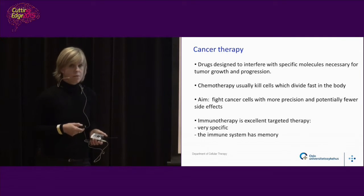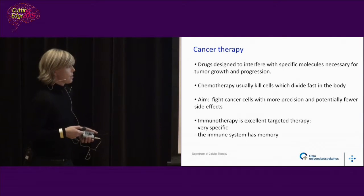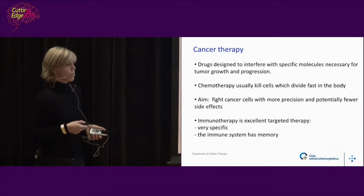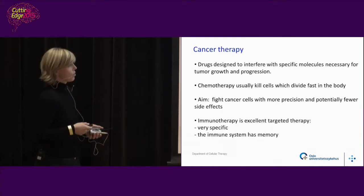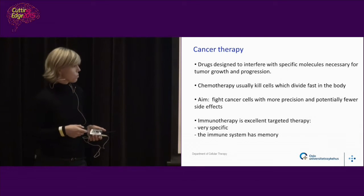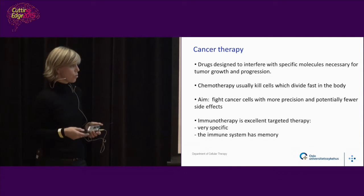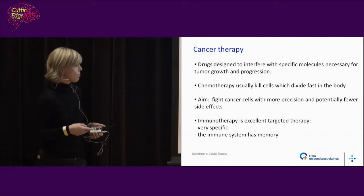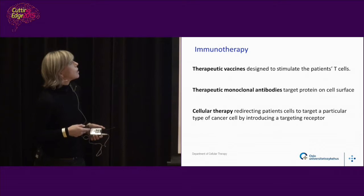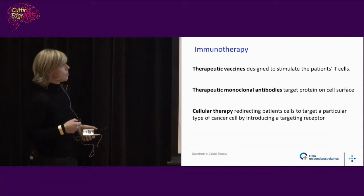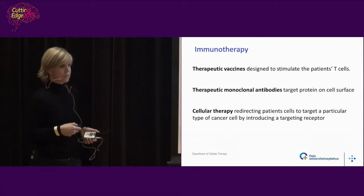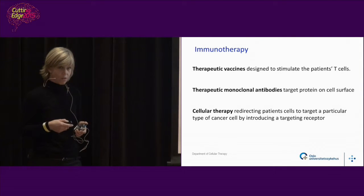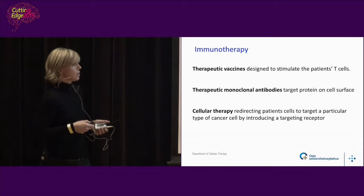The aim of using immunotherapy is to fight cancer with more precision and potentially fewer side effects. This can be done by the immune system because it's very specific and it also has memory — this is why we can vaccinate against viruses. The immune system will be trained and remember the infection, and it will be the same with cancer cells. Therapeutic vaccines are generally not used before you get cancer, so that's the difference between cancer and infectious disease.